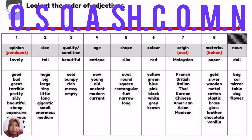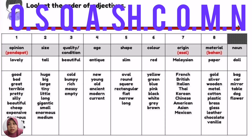Continuing: number five, shape; number six, color; number seven, origin; number eight, material. To remember this order, use the formula: OSCASHCOM — O for opinion, S for size, C for quality (condition), A for age, SH for shape, C for color, O for origin, M for material. If you can remember OSCASHCOM, it's easy to write sentences using the correct order of adjectives.